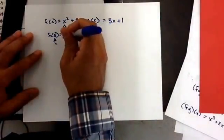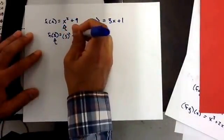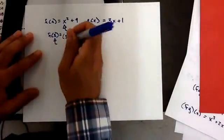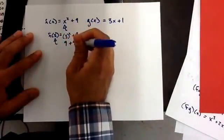So I'm going to say 3 squared plus 9, which gives me 9 plus 9, which gives me 18.